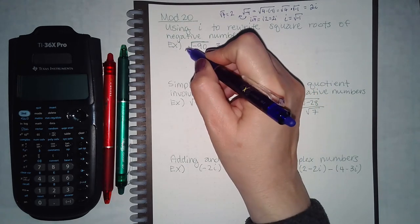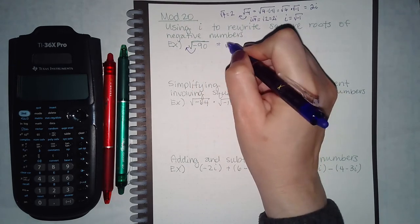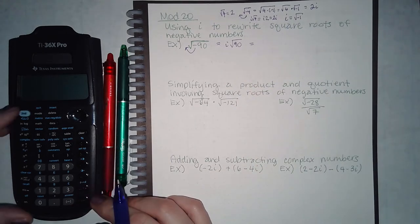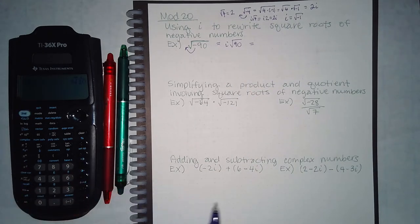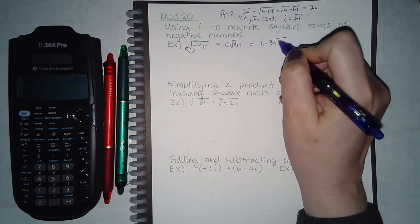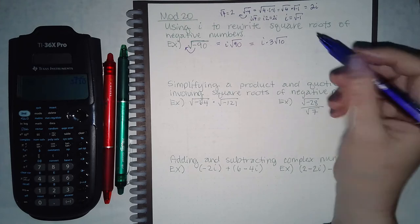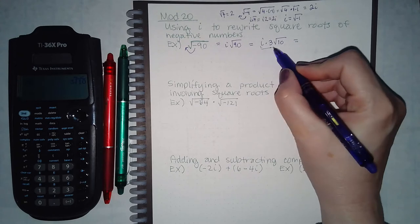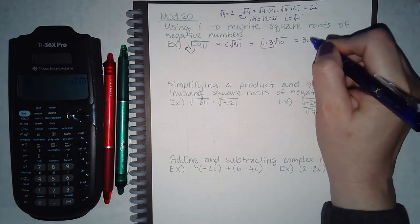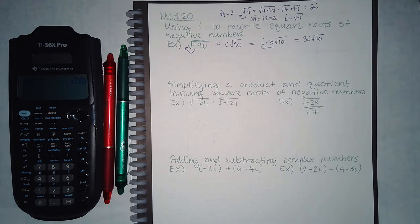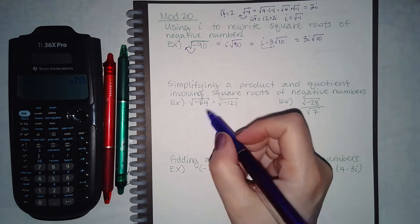For the next example, bring the negative out in front and it becomes an i. The square root of 90 simplifies to 3 square root of 10. Remember, outsides can be multiplied together — the 3 and the i are not under the radical, so I can multiply them together to get 3i, and the square root of 10 just carries along.